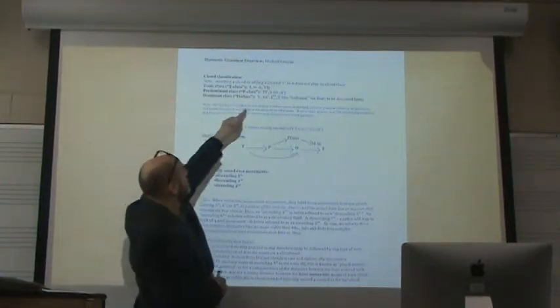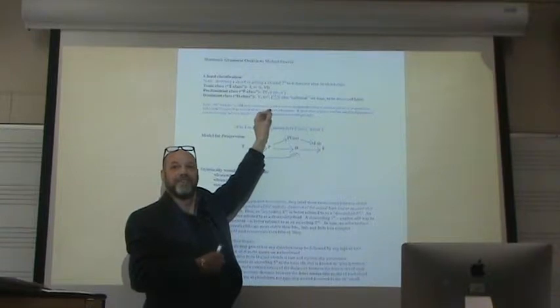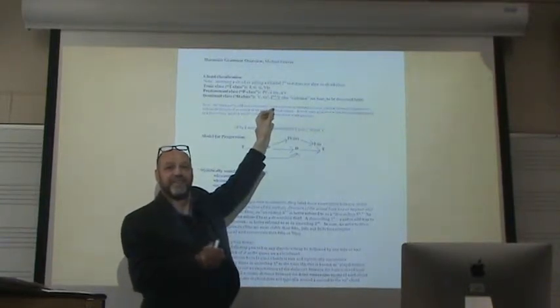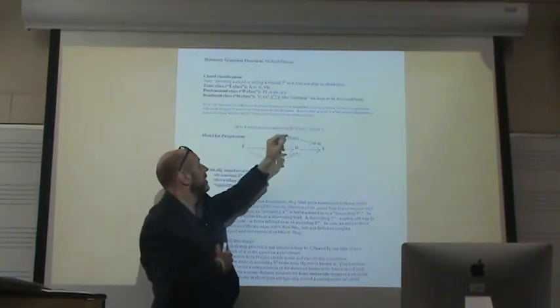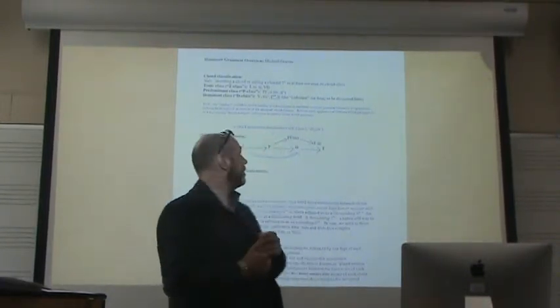And then two to five, Jack? Descending fifth. Right. And two to seven? Descending third.